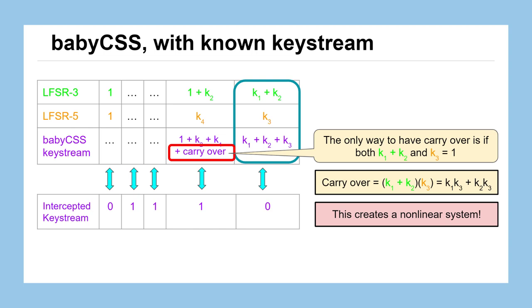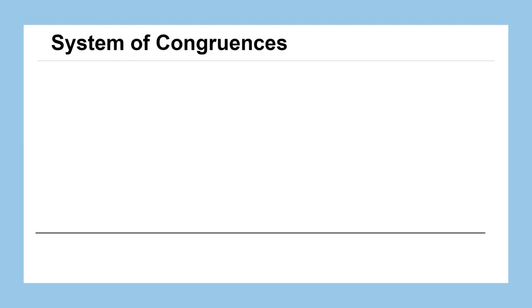Whenever we have our unknowns or our variables being multiplied together, we no longer have a linear system; we now have a non-linear system. So if we were to try and follow through on the next steps like we did with LFSR sum and set up a system of congruencies,